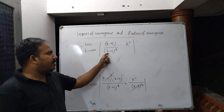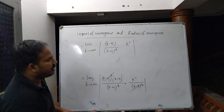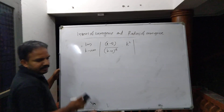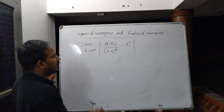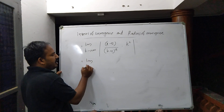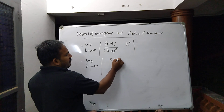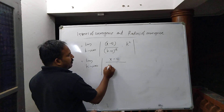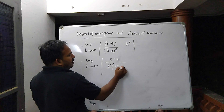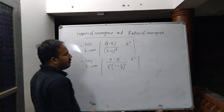After cancellation, this becomes the limit as k tends to infinity of the absolute value of (x minus 5) multiplied by k squared over (1 plus 1/k) squared times k squared. The k squared terms cancel.